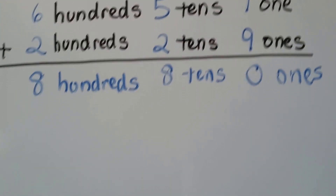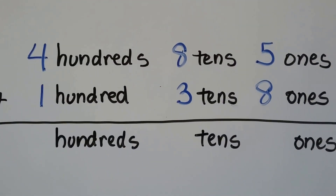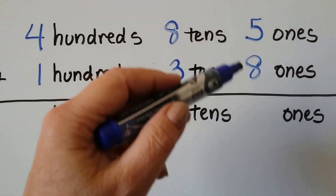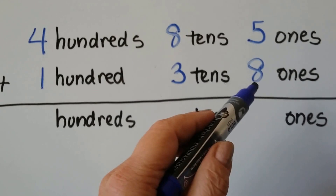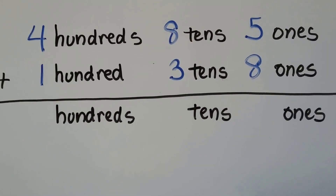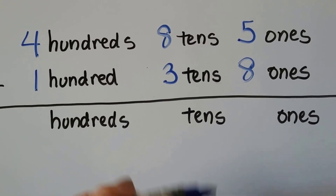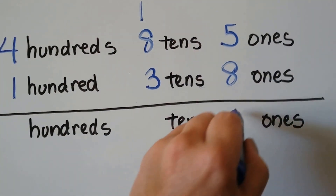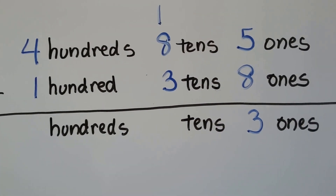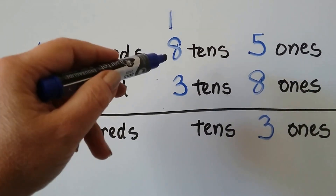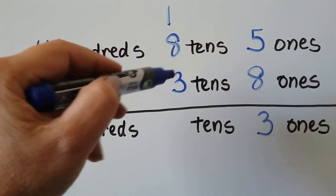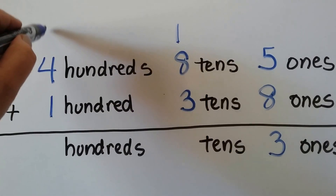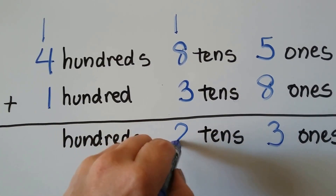Let's try this again. We add the digits in the ones place first. We have five plus eight — we start with the eight because it's bigger and count up five: eight, nine, ten, eleven, twelve, thirteen. We regroup the one up into the tens place and put the three in the ones place. Now we add these tens digits, starting with the big one: eight, nine, ten, eleven, twelve. We can't put two digits there, so we regroup the one up here and the two down here.